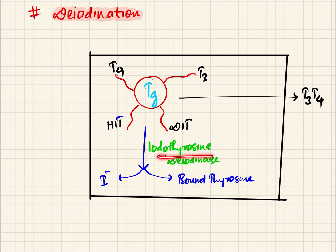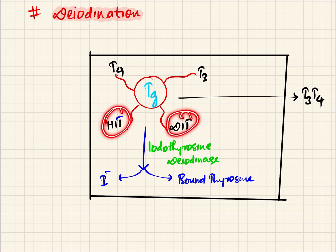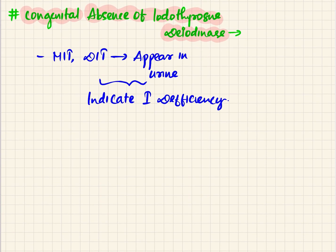If iodothyrosine deiodinase is congenitally absent, MIT and DIT will appear in the urine, indicating iodine deficiency. Because iodide is not being cleaved and recycled from MIT and DIT, the iodine is lost, leading to deficiency even without dietary iodine insufficiency. This appearance of MIT and DIT in the urine in congenital absence of the enzyme is an important applied aspect of thyroid hormone biosynthesis.